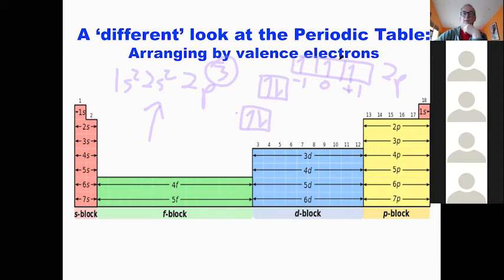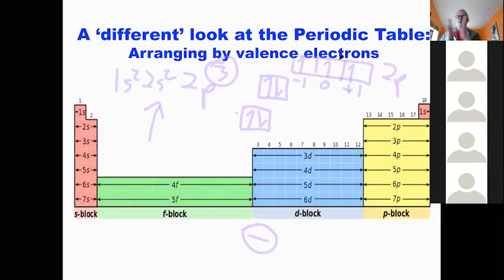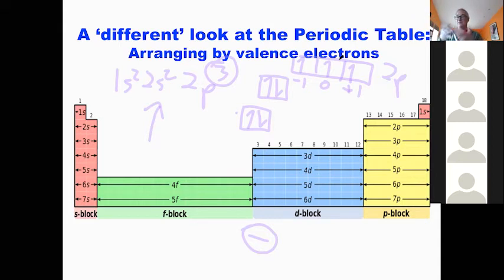Now we have three electrons, one in each orbital. This is the principle that you can't have two electrons in the same orbital until all the orbitals are filled — that's the Pauli exclusion principle. Why? Because electrons are negatively charged and won't want to be in the same space unless there's literally no place else to go. So these three in 2P will be as far away from each other as possible because they repel each other.